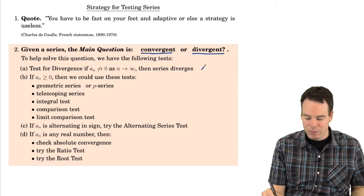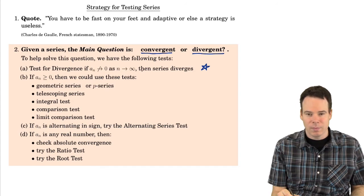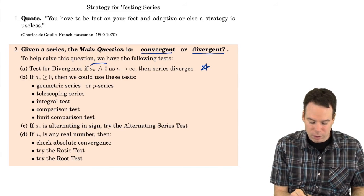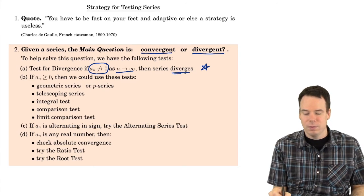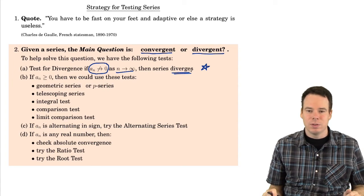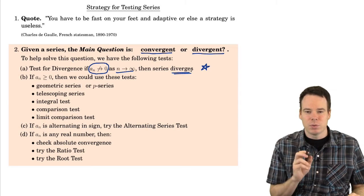The very first thing we should do, however, is always check: do the terms go to zero? If the terms do not go to zero as n goes to infinity, then we can definitively say the series diverges, no question about it. But if the terms go to zero, there's more work to do.